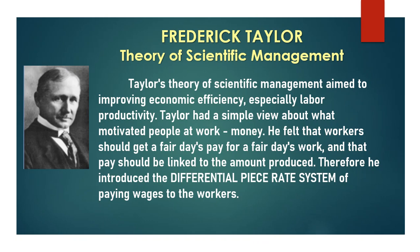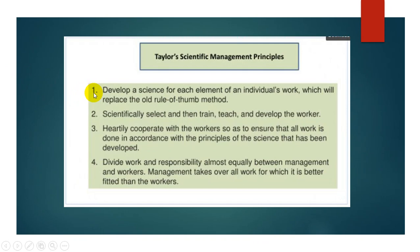Taylor's scientific principles: one, develop a science for each element of an individual's work, replacing the old rule-of-thumb method; two, scientifically select, train, teach, and develop the worker; three, heartily cooperate with the worker to ensure all work is done in accordance with the principles of the science developed; and four, divide work and responsibility almost equally between management and workers, with management taking over all work for which it is better fitted.